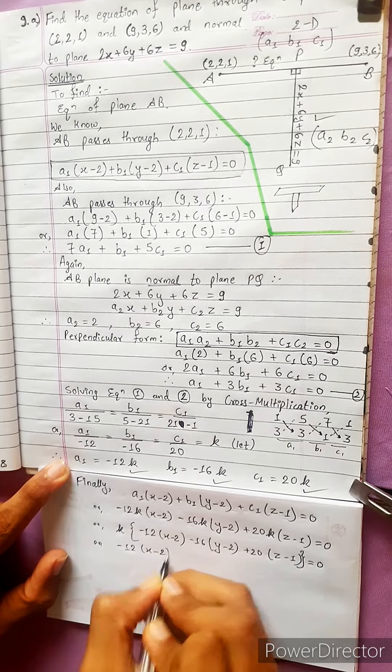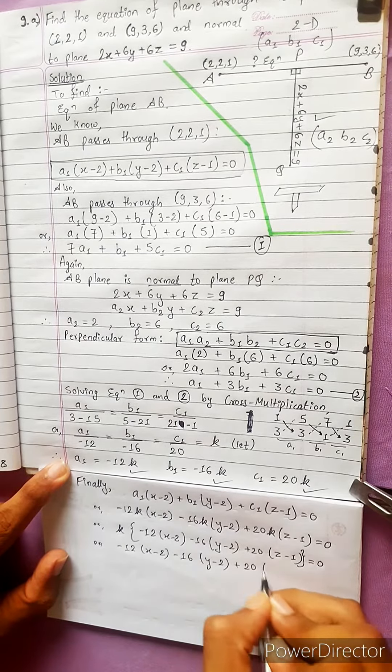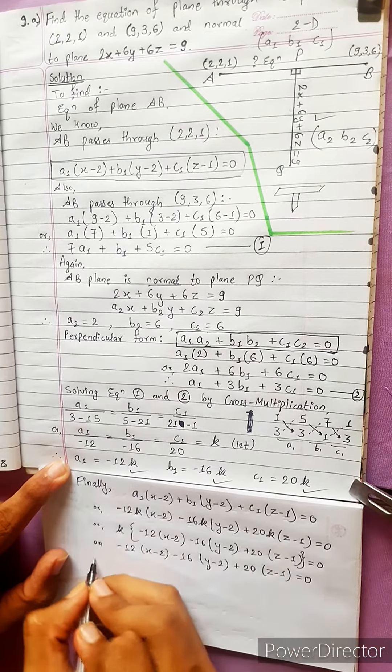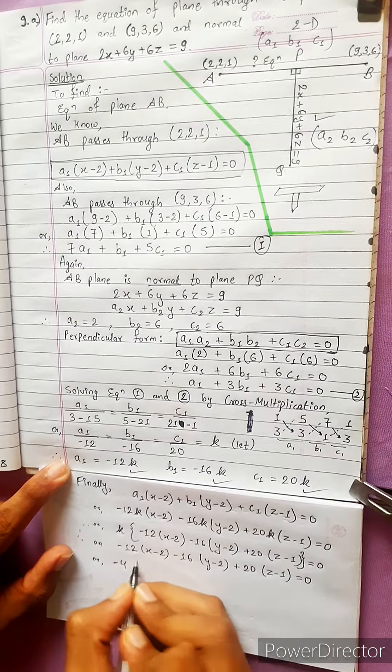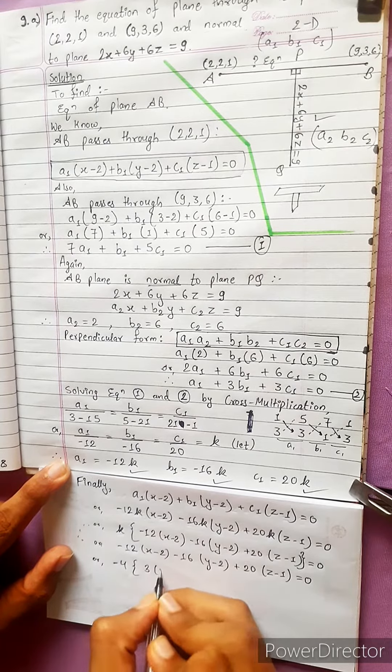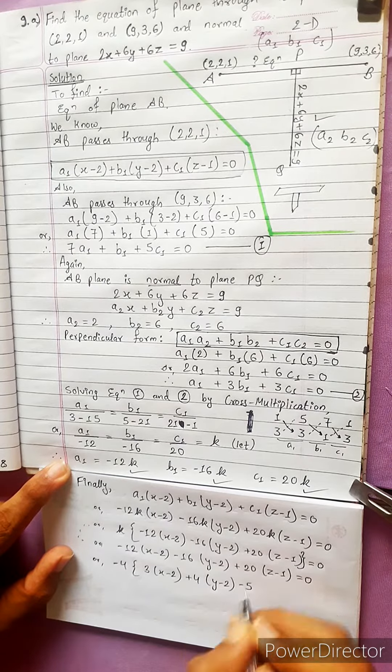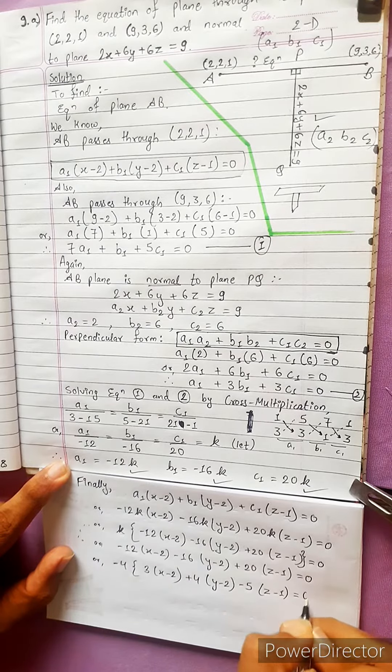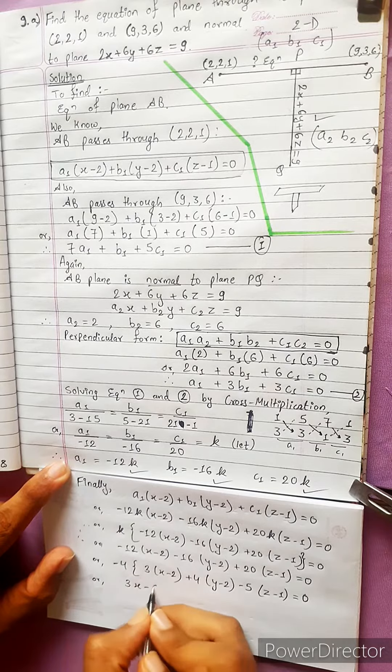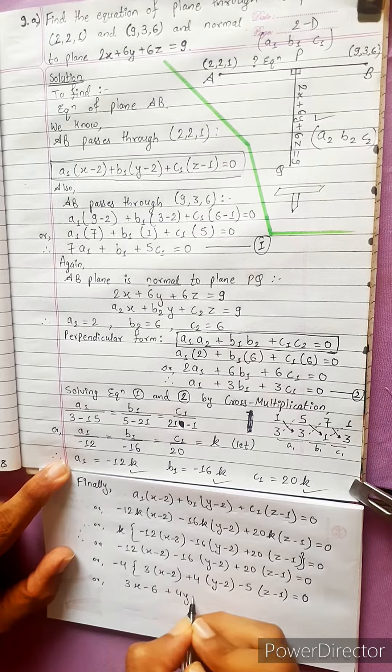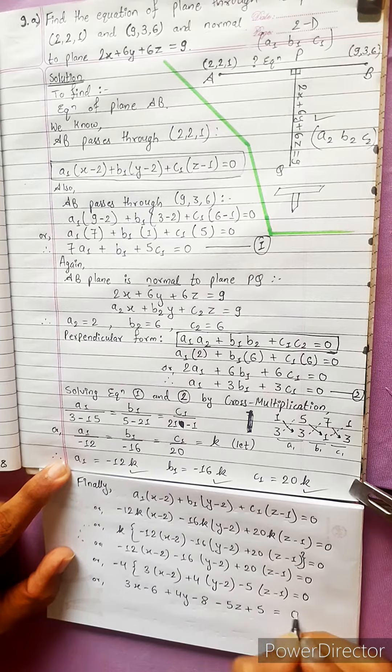-12(x - 2) - 16(y - 2) + 20(z - 1) = 0. Taking 4 common: -3(x - 2) - 4(y - 2) + 5(z - 1) = 0. Expanding: -3x + 6 - 4y + 8 + 5z - 5 = 0.